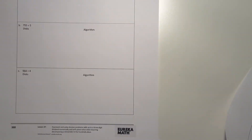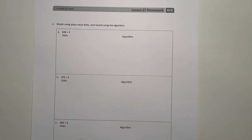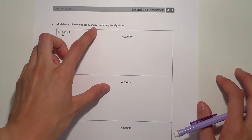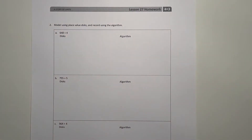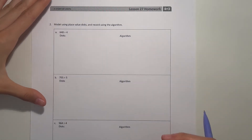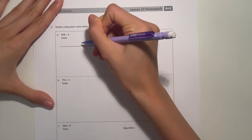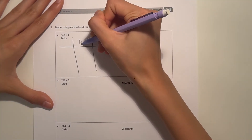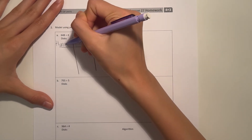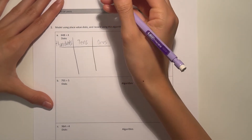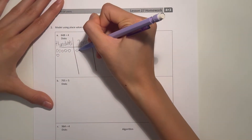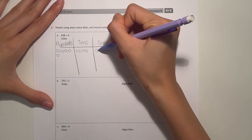Alright, and this would be the last page. To model using place value disks and record using the algorithm — this is basically the same thing we were doing before. 648 divided by 4. Let's do our ones, tens, and our hundreds. 648: that's 600, four tens, eight ones.